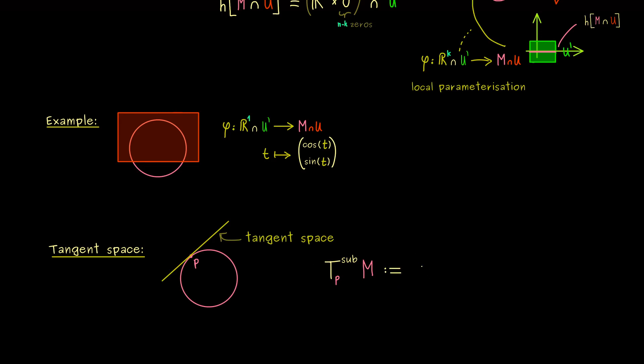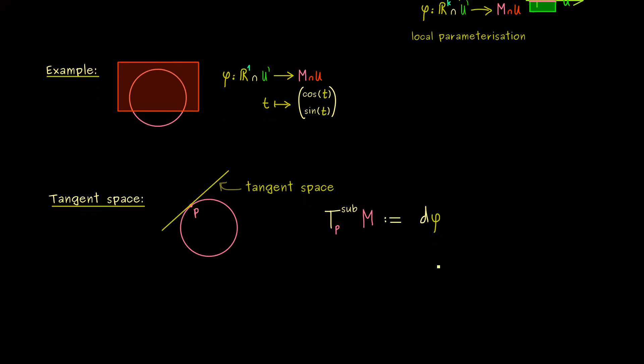Okay, and now the definition here is simply that we look at the range of the differential of phi. Of course, by the definition of the differential, we always need a point. Moreover, this should be the point in the domain of definition corresponding to our p. And I would say, let's simply call it p tilde. So the short definition would be, it's the pre-image of p. Obviously, this is not a problem, because phi is bijective.